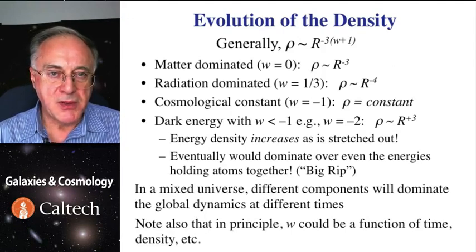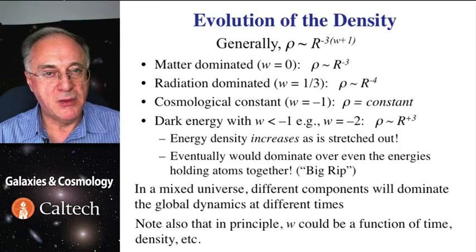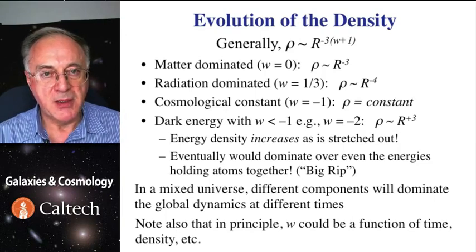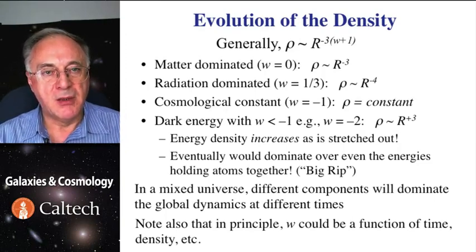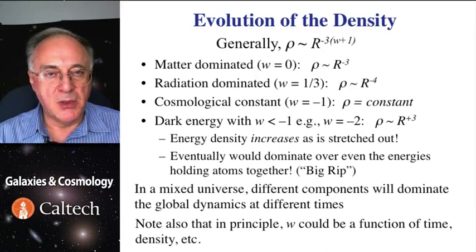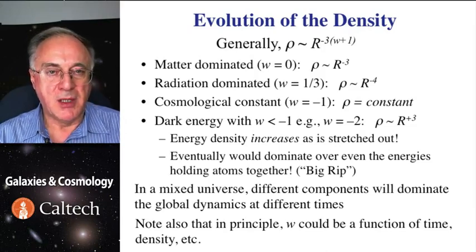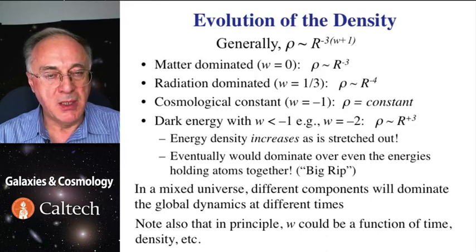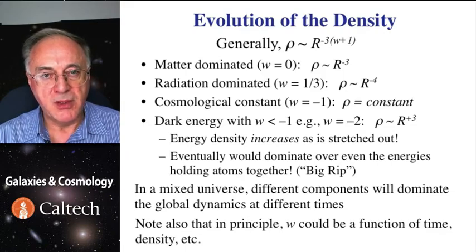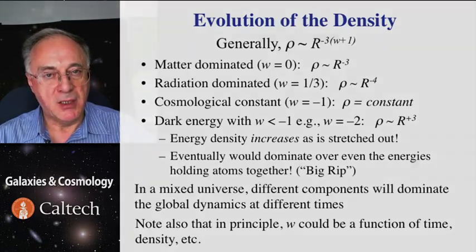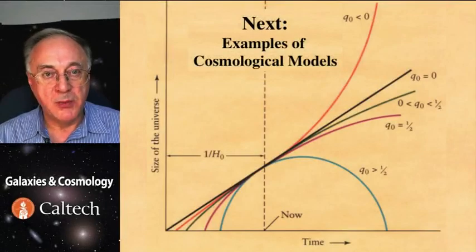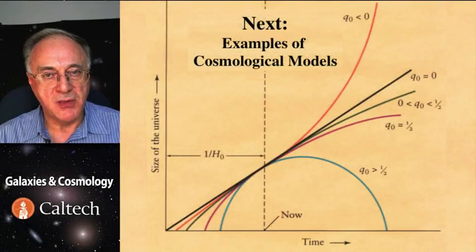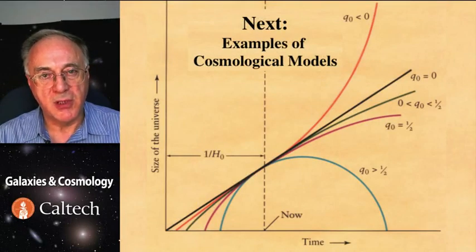In a realistic universe, there will be a mixture of these components, and the expansion will change. At different times, different components will determine how the universe is expanding, because some of them decline in density faster than the others. Also, remember that we have assumed that W is constant, but it need not be. In itself, it can be changing as a function of time, but we have no theory whatsoever which could indicate why would that be and how. So this is how we solve Friedmann equation. The output of it is really how the density of the universe changes as a function of time. Next time, we'll consider some examples of actual cosmological models.